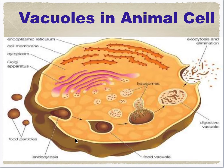In the animal cell, a vacuole is actually the same as endosomes, phagosomes, and exosomes formed during endocytosis and exocytosis. These are the same vesicles in the cell cytoplasm, and even the lysosomes are also digestive vacuoles containing digestive enzymes in eukaryotic cells.